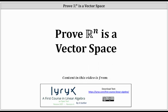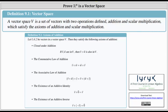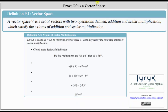This lesson will prove that Rn is a vector space. In the previous lesson, we defined a vector space as a set of vectors with two operations defined: addition and scalar multiplication, which satisfy the axioms of addition and scalar multiplication. The five axioms of addition are shown below, and here we have the five axioms of scalar multiplication.